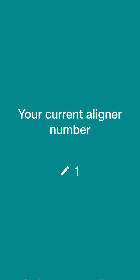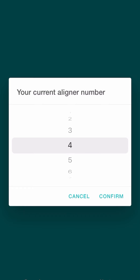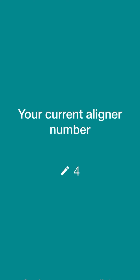This is your current aligner number. If you've already been using your aligners for a while, then you want to go to the one that you're currently on. If this is your first day using Trayminder and this is your first day starting treatment, you would be on aligner number one.